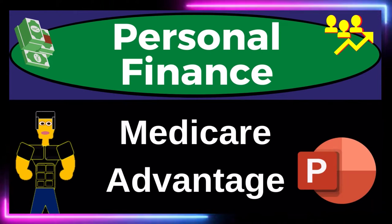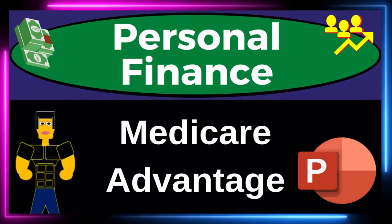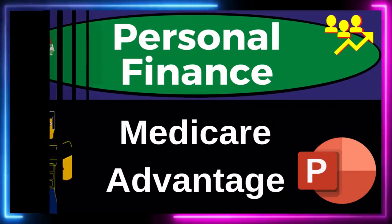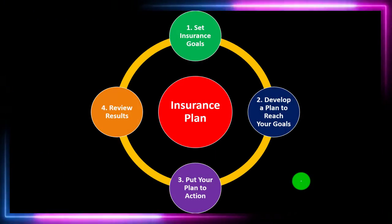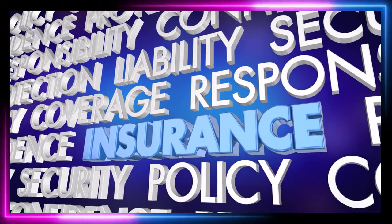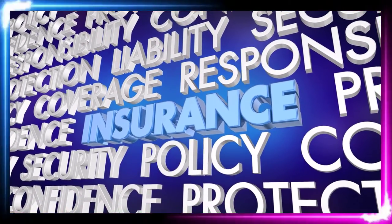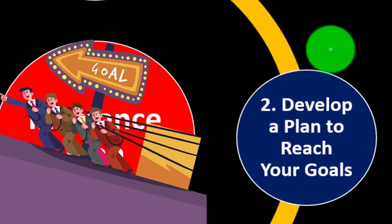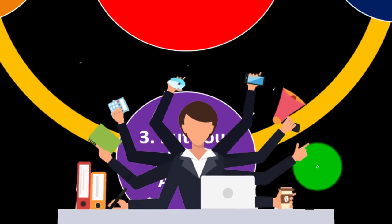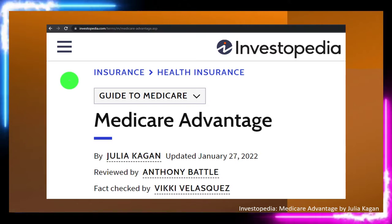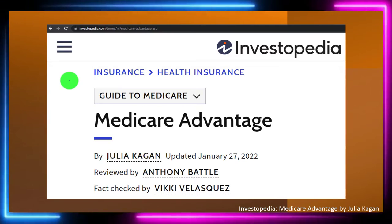Personal Finance PowerPoint Presentation on Medicare Advantage. Prepare to get financially fit by practicing personal finance. Insurance is part of our long-term risk mitigation strategy where we follow the adage of measure twice, cut once. Put a formal process in place — something like setting goals, developing a plan to reach them, putting the plan in action, reviewing the results, and repeating the process periodically.